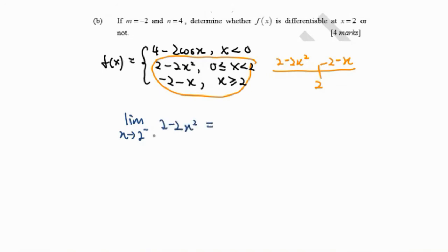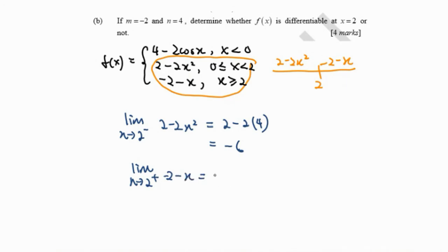The limit as x approaches 2 from the left-hand side — the function selected gives an answer of 2 minus 2 times 4, which is negative 6. Meanwhile, the limit as x approaches 2 from the right-hand side — the function selected is negative 2 minus x — gives negative 2 minus negative 4, which is negative 2 minus negative 2. Notice that the left-hand limit and right-hand limit are not the same, so the limit does not exist.